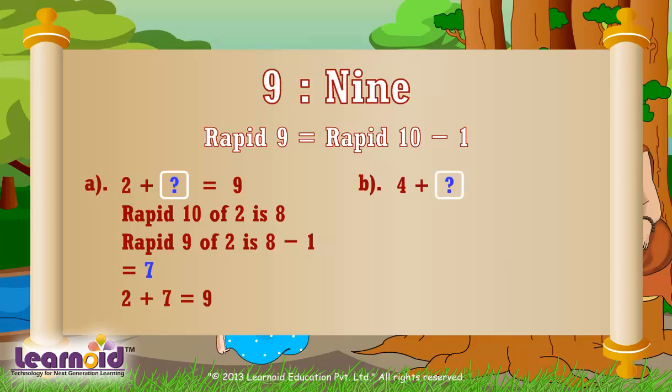Let's find Rapid 9 of 4. First find Rapid 10 of 4, which is 6. Now Rapid 9 of 4 is 6 minus 1, that is 5.